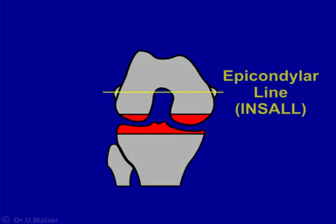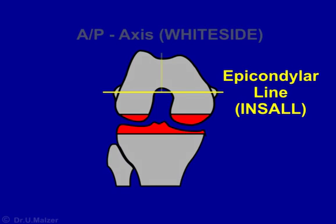Two reference lines have proved particularly useful for this purpose. The transepicondylar axis, or insall line, connects the medial and lateral epicondyle, and the posterior cut is made parallel to this line. Additionally, there is the so-called AP axis, or Whiteside line, which connects the deepest part of the patellar groove anteriorly with the center of the intercondylar notch posteriorly. The AP axis is virtually always at right angles to the transepicondylar axis. These landmarks allow the femoral component to be positioned in correct rotational alignment and to obtain better centering of the patella.